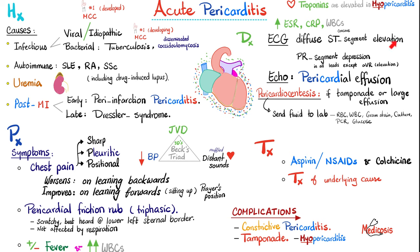Let's do an EKG: diffuse ST segment elevation — concave elevation in all leads. PR segment depression in all leads, except AVR, where we have PR elevation. On echo — ultrasound — we see pericardial effusion. Anytime there is effusion not responding to treatment, it is time to tap it and send it to the lab — pericardiocentesis, if it's a large effusion or if there is cardiac tamponade. Lab tests include red blood cell count, white blood cell count, gram stain, culture, PCR for virus or tuberculosis, glucose, LDH, pH, and much more.